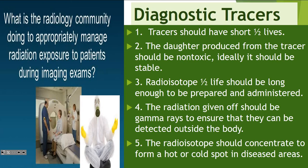They're also making sure they get results with a minimum amount of exposure. With tracers, they've got to have short half-lives — they've got to get out of the system quickly. The daughter produced by the tracers should be non-toxic, so when it radioactively decomposes from parent to daughter, we want the daughter not to be radioactive. The radioisotope half-life should be long enough that it can be prepared, moved to the hospital, and put into the patient with enough time to actually get results. The radiation given off should be gamma rays to ensure it will leave the body, not bounce around inside causing damage, and be detected outside the body.